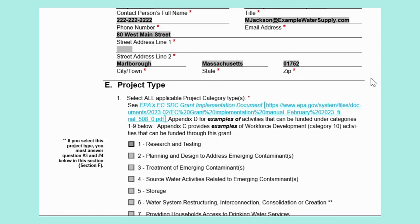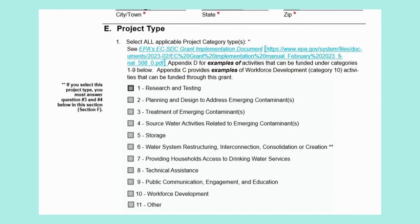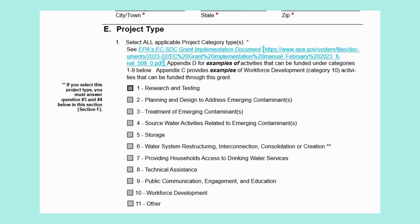We will now begin to include information specific to your project in the following sections. Section E, Project Type. First, you will need to select all applicable project categories. If you are unsure of what activities may be applicable under these categories, you may go to the EPA's EC-SDC grant implementation document and read Appendix D for examples of approved activities for categories 1 through 9. Appendix C provides examples for category 10. For our example, we are connecting two small PWSs to the larger municipal system — the project is consolidation, so we will select category 6.